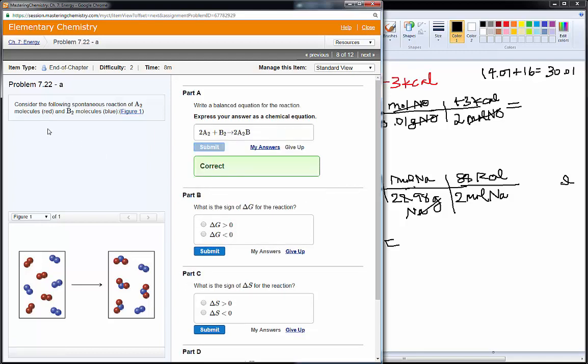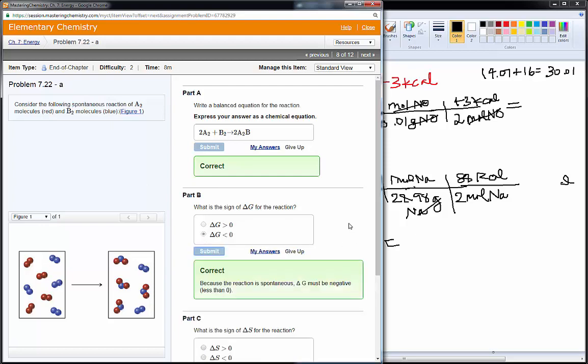What is the sign for delta G? If we read this carefully, it tells us it was spontaneous. There's no other way I would know. So, because it's spontaneous, delta G must be negative. That's what it means to be spontaneous.